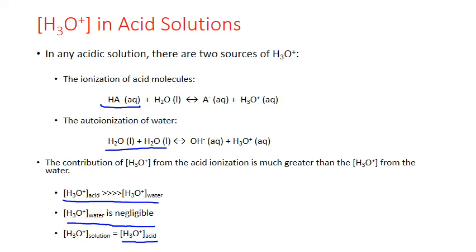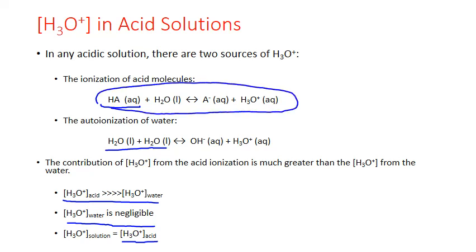To calculate pH of an acidic solution, we just have to figure out how much hydronium results from the ionization of our acid. How we figure that out is going to depend upon whether the acid involved is a strong acid or a weak acid.